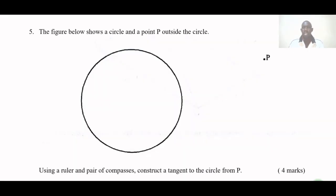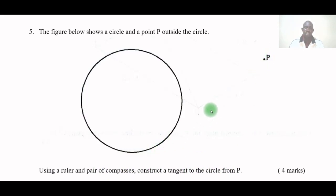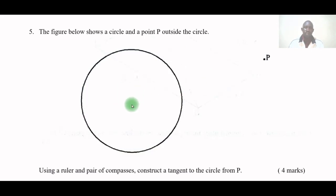Welcome. Today we are going to look at the construction of a tangent from an external point to the circumference of a circle. The question says the figure below shows a circle and point P outside the circle. We are supposed to use a ruler and a pair of compasses to construct a tangent to the circle from P. To do this, we first need to locate the center of the circle.